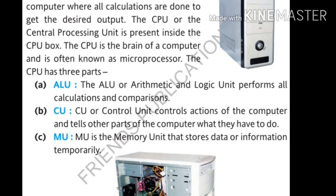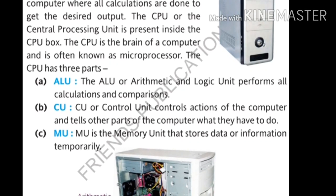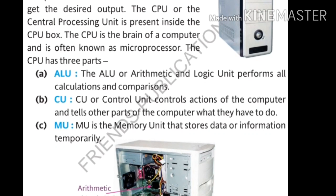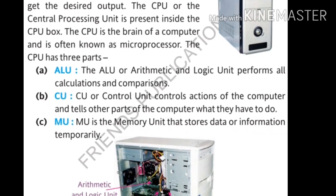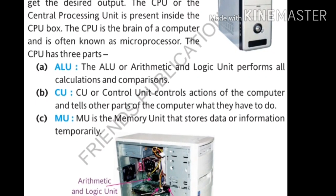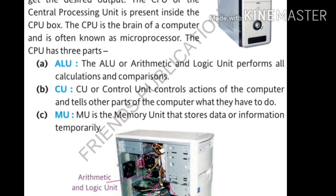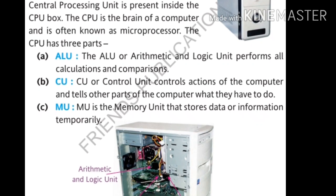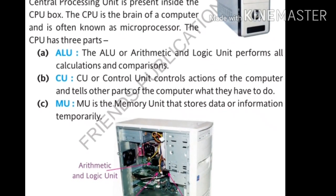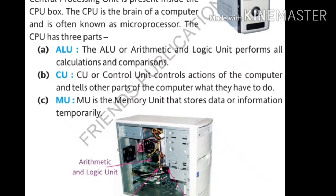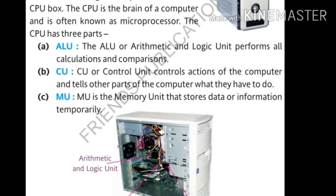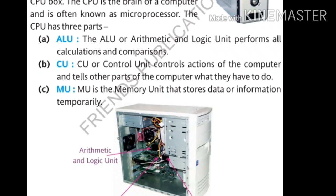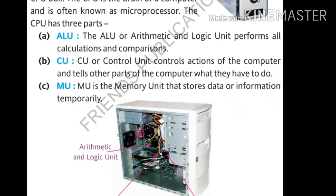The CPU has three parts. First is ALU — Arithmetic and Logic Unit. Whatever calculation the computer does is performed in the ALU. Next is CU — the Control Unit. It controls the actions of the computer and tells other parts what they have to do. Next is MU — the Memory Unit. Whatever we store is stored in the memory unit. It stores data and information, but not permanently — only temporarily, meaning for a short time.